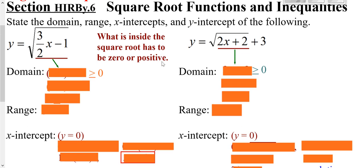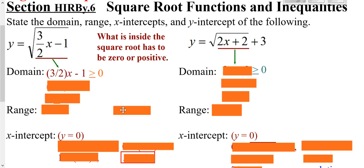Now we'll get on to dealing with square root functions and graphing square root functions and graphing inequalities. Remember, whatever is inside of your root can't be negative. So what's inside your root has to be greater than or equal to zero. We're going to take what's inside of our root, set it to be greater than or equal to zero. If we solve that, that's going to tell us what numbers we can put in, which would be our domain.